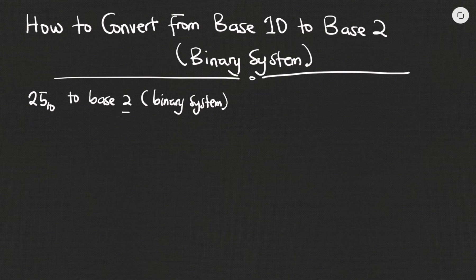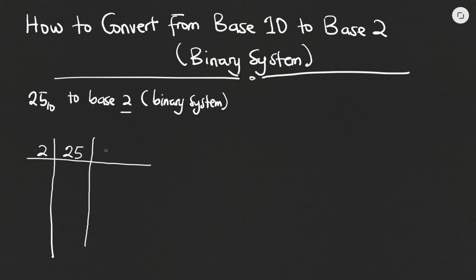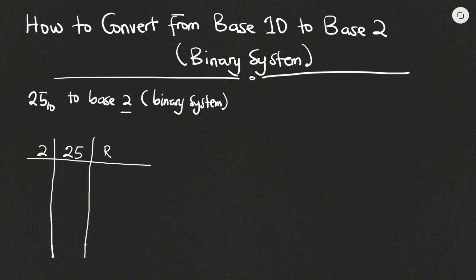So let's look at how we convert 25 base 10 to base 2. Because we want to convert to base 2, we write down 2 first, then draw a straight line, then write the number we want to convert — which is 25 in this case — and then we write down 'R' which stands for remainder. We divide 25 by 2 until we can no longer divide, writing down the remainder at each step.